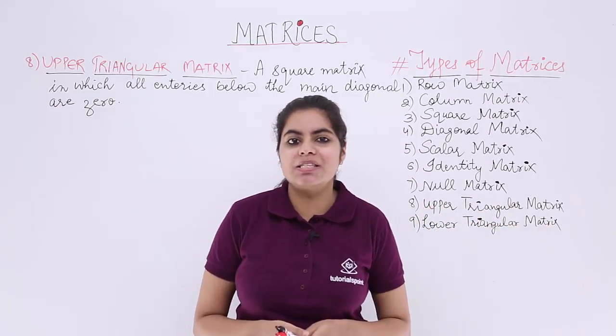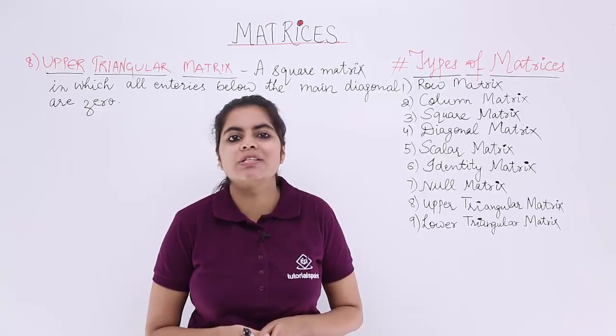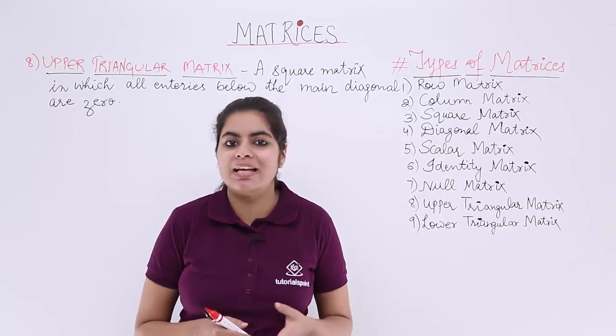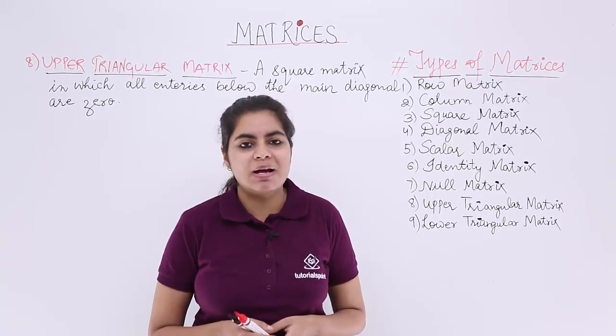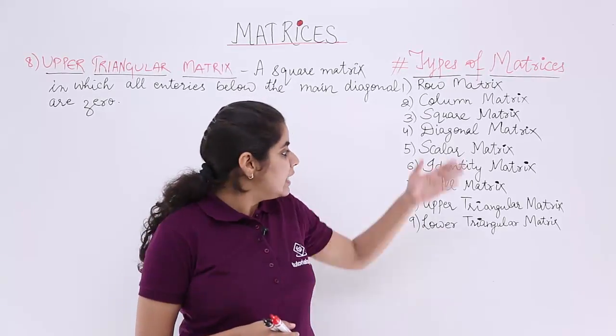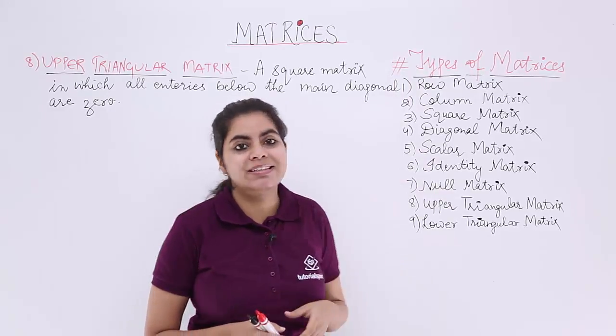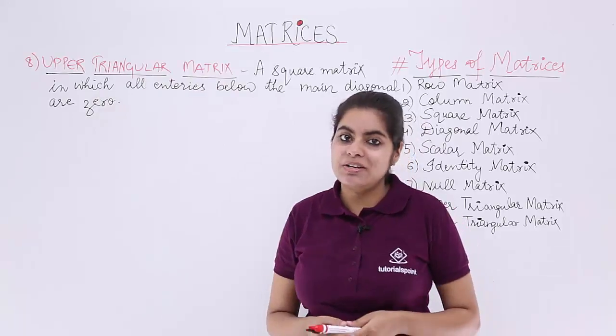We have already seen in our previous videos many other types of matrices like row matrix, column matrix, square matrix, diagonal matrix, scalar matrix, identity matrix, null matrix, and in succession to all those types, we have the 8th type of matrix called the upper triangular matrix.